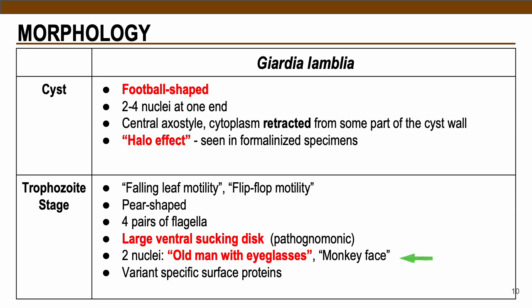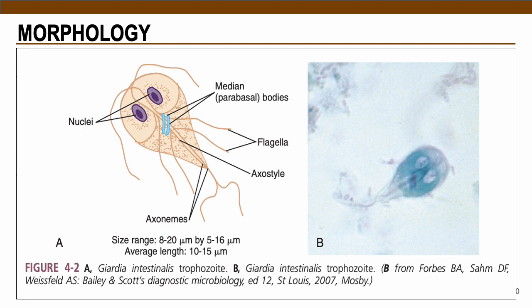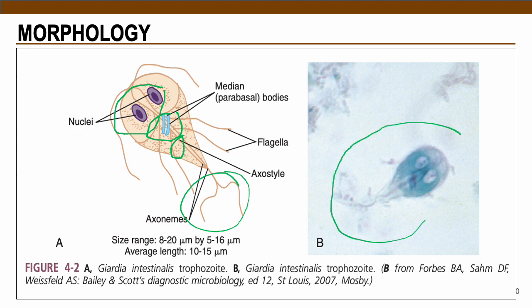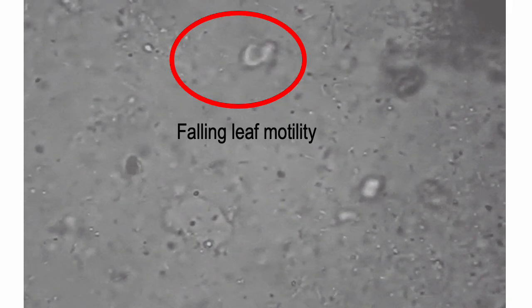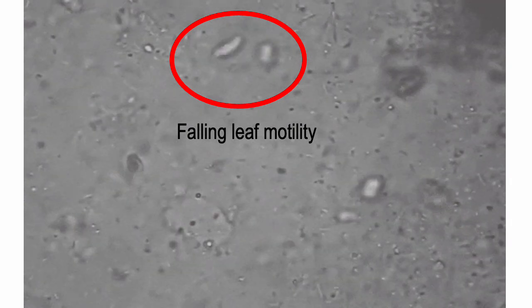In terms of their nuclei, it contains 2 nuclei located anteriorly. Some textbooks describe this as the old man with eyeglasses appearance, or a monkey face, and it also contains various specific surface proteins. As you can see in the picture on the left, the trophozoite structure shows the flagella, the axostyle, the anteriorly located nuclei, and the median or parabasal bodies. On an actual stained slide, it looks like an old man with glasses. Here is the falling leaf or flip-flop motility of Giardia lamblia, which is a diagnostic finding for the presence of this parasite.